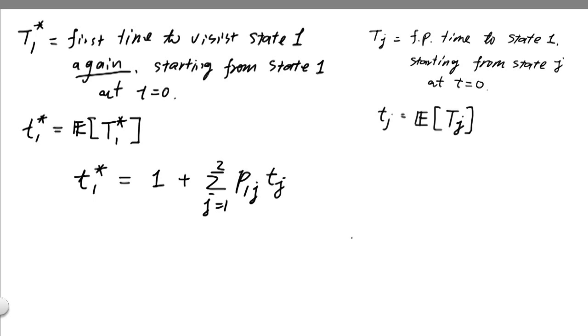Again, the interpretation is we started at state one at time t equals 0, we went to some other state, call it j. And from state j, it goes around, and after time, expected value tj, we came back to state one.